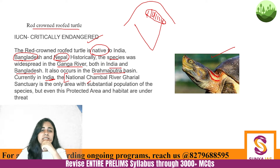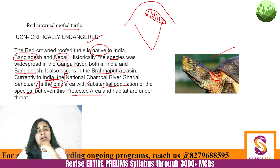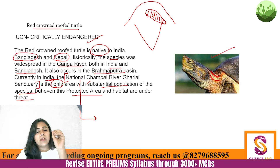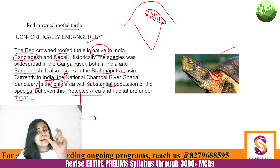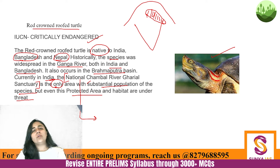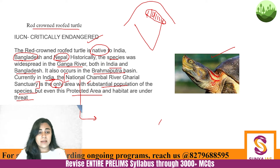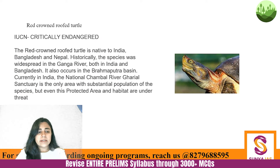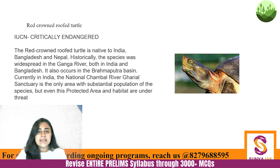Currently in India, the National Chambal River Gharial Sanctuary is the only area with a substantial population of this species — and even this protected area is under threat. Sometimes a question comes wherein a description of a particular animal is given and you are asked to identify it; in that description, the name of a particular sanctuary will be given — that it is found only there. You will remember the Red Crowned Roofed Turtle only if you take a screenshot and revise it again and again, since the PPT will not be provided. It is critically endangered and found only in the National Chambal River Gharial Sanctuary.